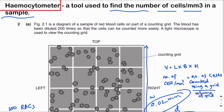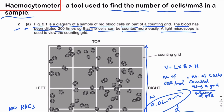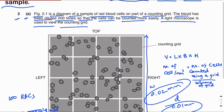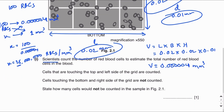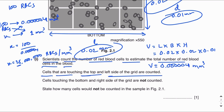Let's solve question number two, part (a). Figure 2.1 is a diagram of a sample of red blood cells on part of a counting grid. The blood has been diluted 200 times so that the cells can be counted more easily, and a light microscope is used to view the counting grid. Scientists count the number of red blood cells to estimate the total number. Cells touching the top and left side of the grid are counted; cells touching the bottom and right side are not counted.